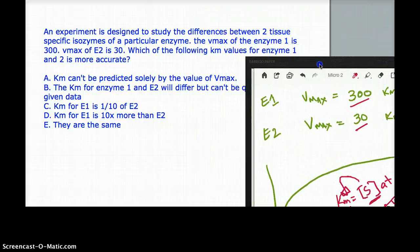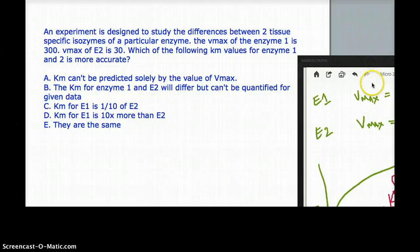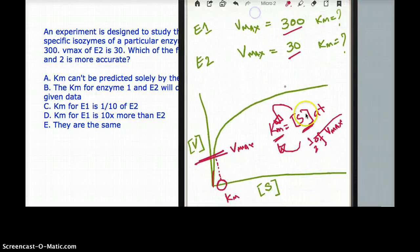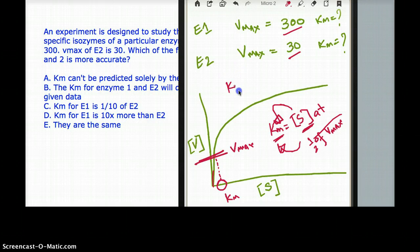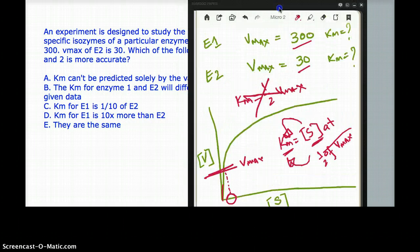Now that's the whole concept of the question. So you cannot just say Km is equal to 1 by Vmax. That's really not a real equation. Km is not equal to 1 by Vmax. Km is equal to substrate at half Vmax. This is a wrong concept or a wrong equation to think about.